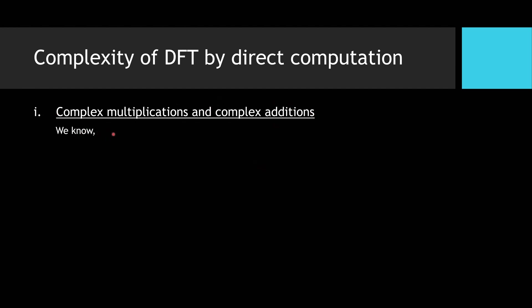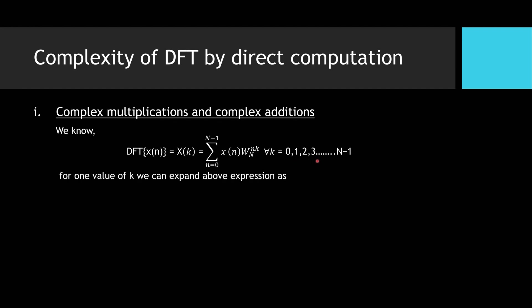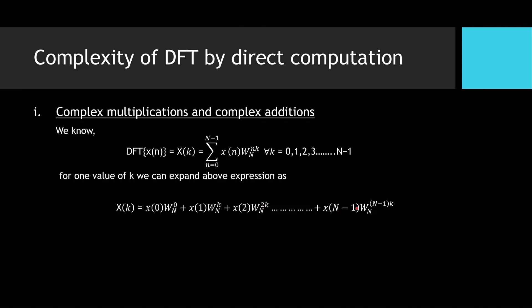We will take the DFT expression for all K equal to 0, 1, 2, 3, up to N minus 1, so K has N values. For one value of K, expanding the DFT expression gives: X(K) equals X(0)·W_N^0 plus X(1)·W_N^K plus X(2)·W_N^(2K), and so on up to X(N−1)·W_N^((N−1)K).